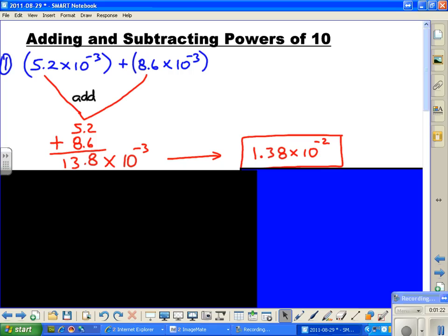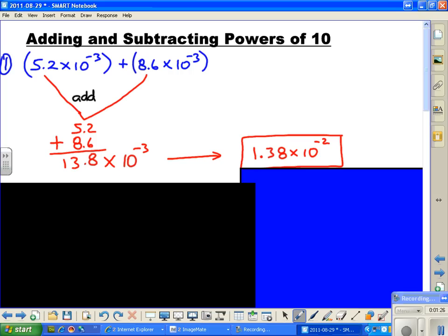Scientific notation is simply, like you see right here, we have one non-zero digit, and two non-zero digits. That's not scientific notation.